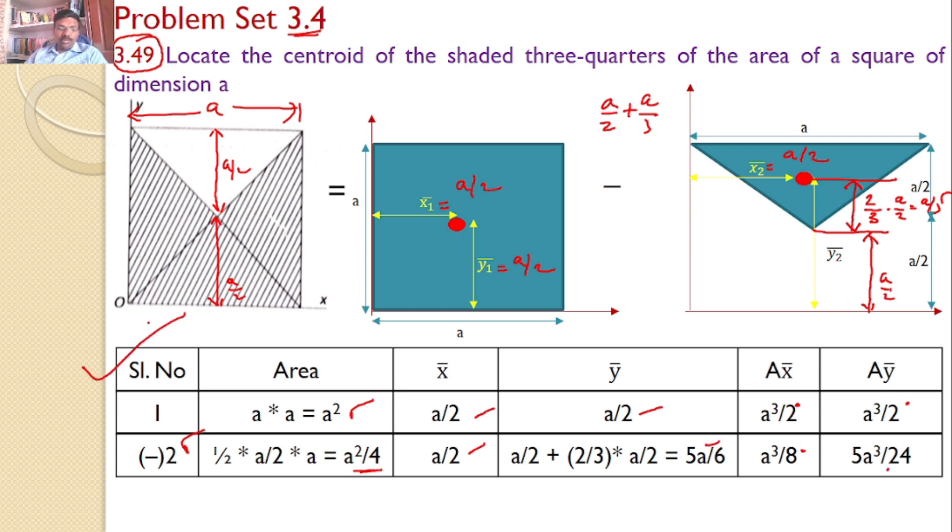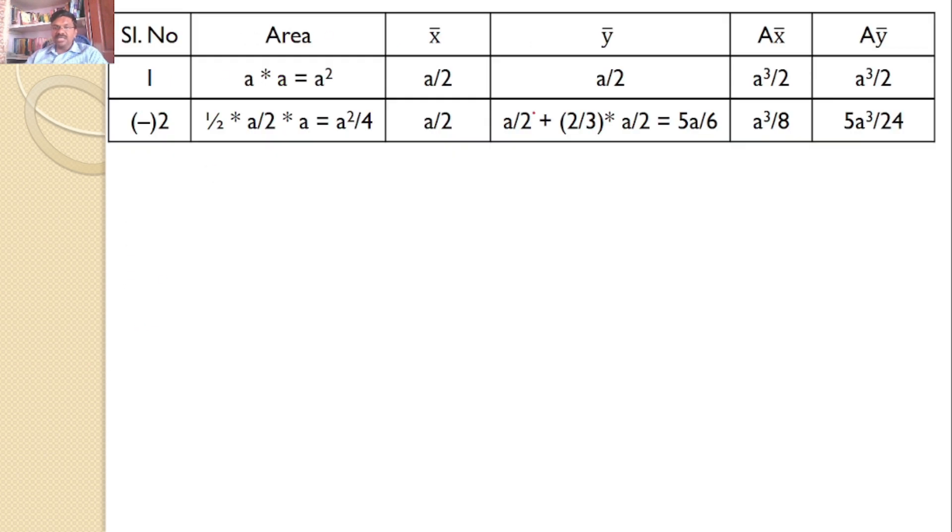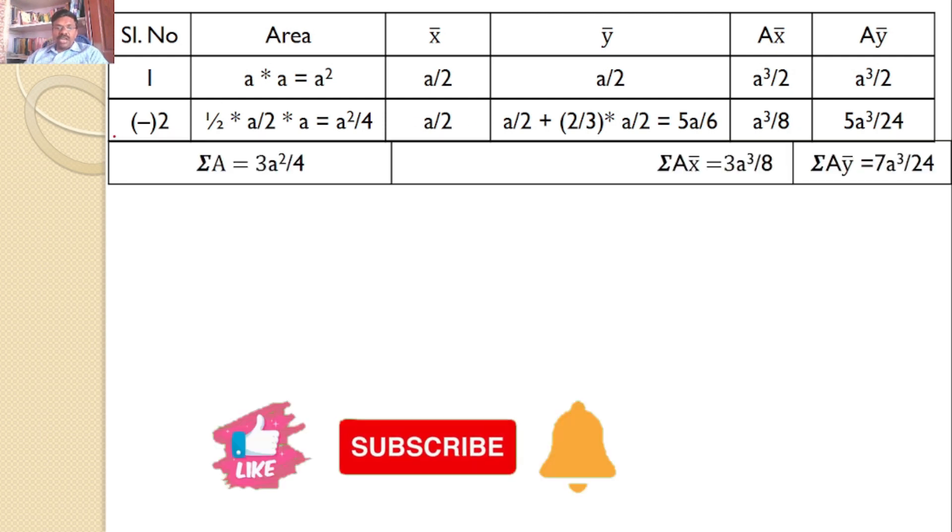And we can calculate A x bar. Let us take this table now for the remaining calculations. This is the table, and this is the minus. Clearly, we can see the total thing is to be subtracted from area 1. Now, that's sigma A. Area 1 minus area 2, a squared minus a squared by 4,